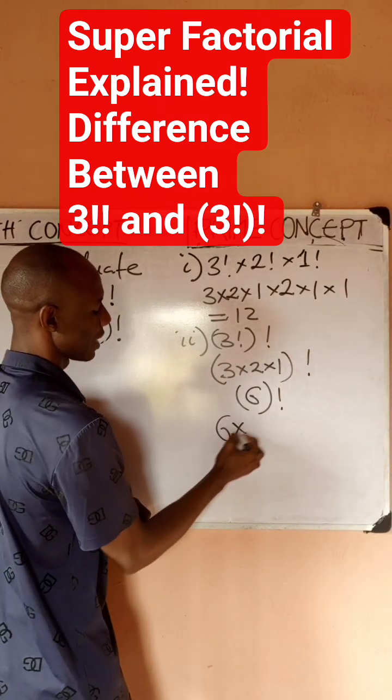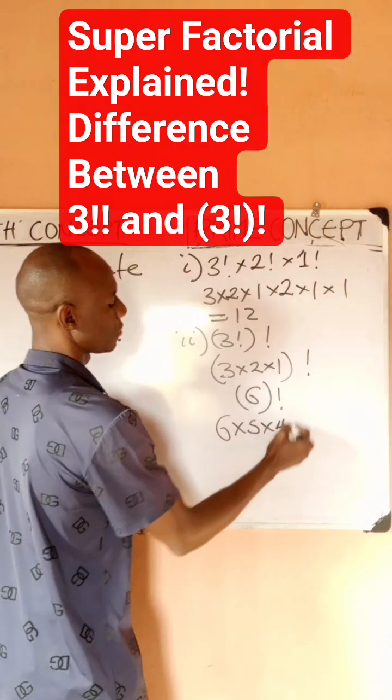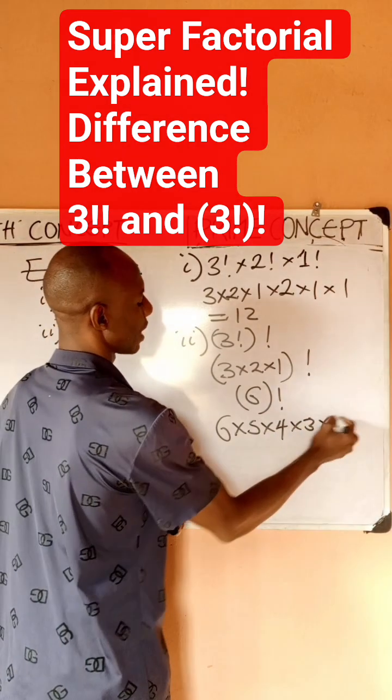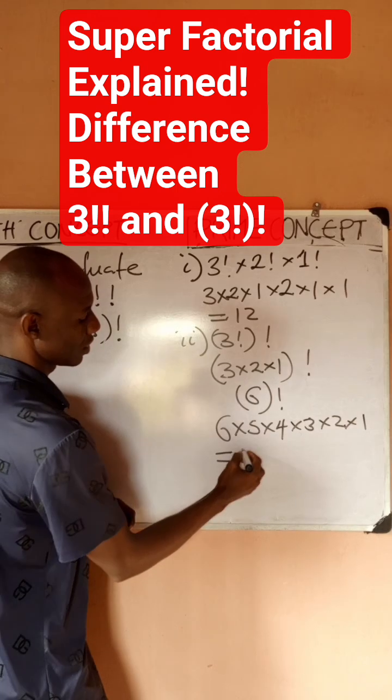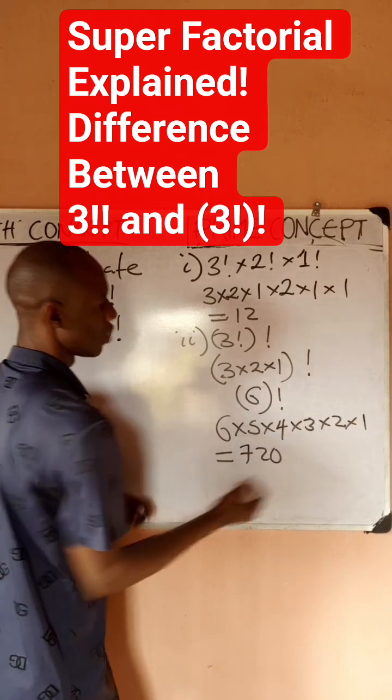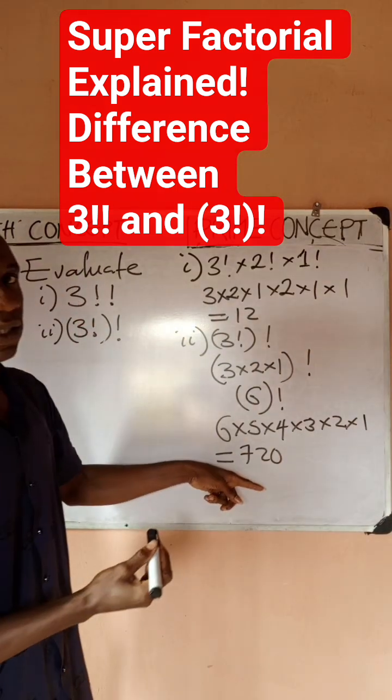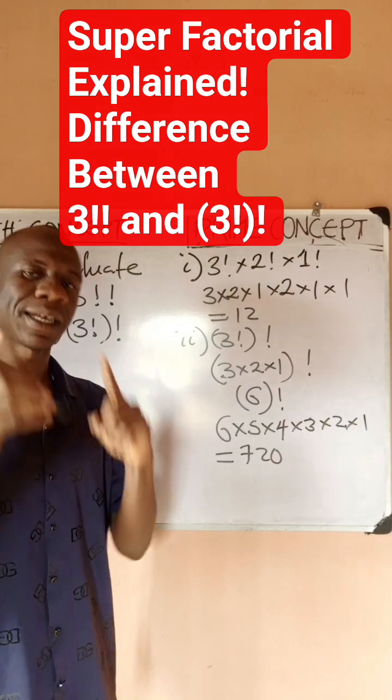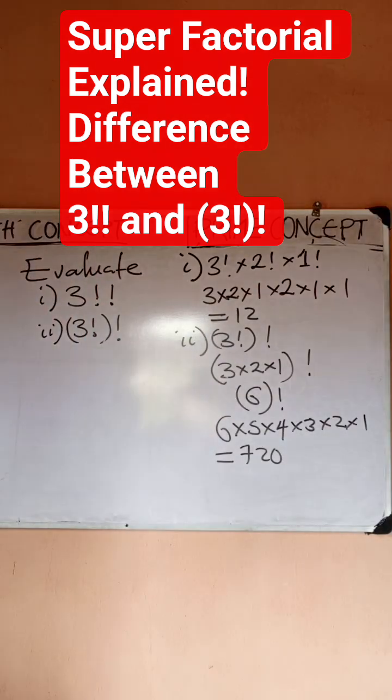So if I solve this, it will give me 720. So you can see the results are not the same. I believe this is clear. Thanks for watching Prime Concept.